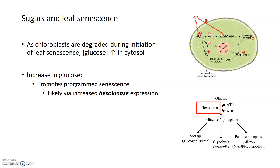Throughout this whole process there is a really high involvement of sugars or carbohydrates in leaf senescence. As the chloroplasts are being degraded during the initiation phase, the glucose concentration within the cytosol increases. That can partially lead to an even further increase in mitochondrial respiration because there's a lot of glucose available. That glucose can be broken down via respiration into ATP, generating more reactive oxygen species and promoting further programmed senescence.